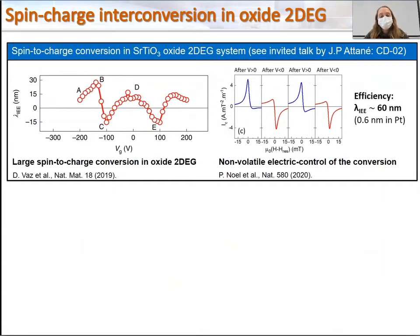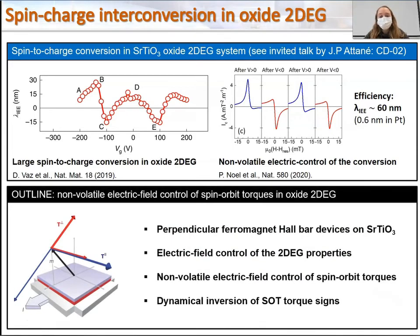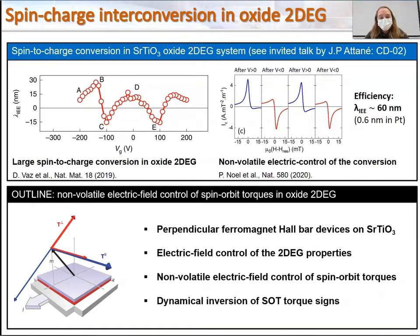In a previous work, we demonstrated a large spin-to-charge conversion in oxide 2D gases, along with a non-volatile electric control of the spin-to-charge conversion efficiency. The next step will be to achieve the electric control of the charge-to-spin conversion for developing reconfigurable SO-T MRAM. In this presentation, I will present the results we obtained on the non-volatile electric field control of spin-orbit torque in oxide 2D gases, describing our development of perpendicular flow magnets on strontium titanate oxide and the non-volatile electric control of the 2D gas properties, as well as the electric field control of spin-orbit torque together with dynamical switching of the SOT sign with voltage pulses.